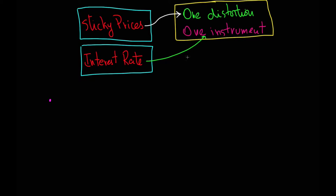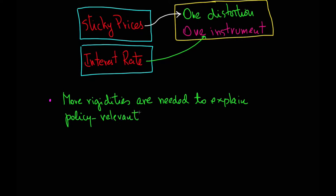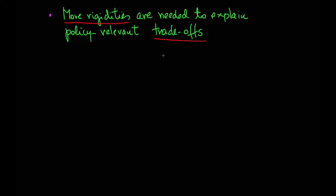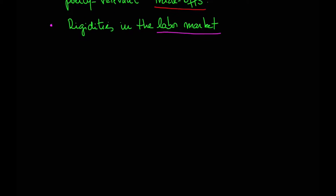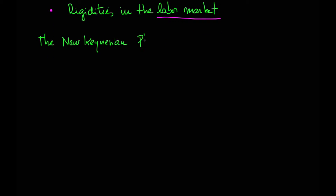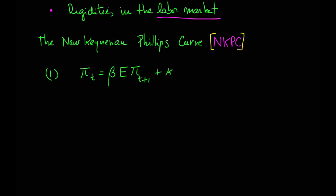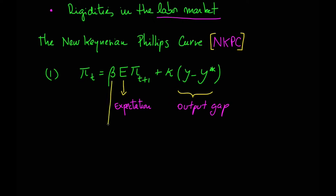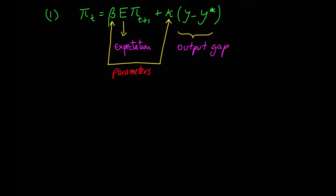More rigidities are needed to explain policy-relevant trade-offs. Today we will talk about rigidities in the labor market. So let's begin with the New Keynesian Phillips curve. We have a model where inflation is associated with expected inflation and with the output gap, and we have beta and kappa as parameters.